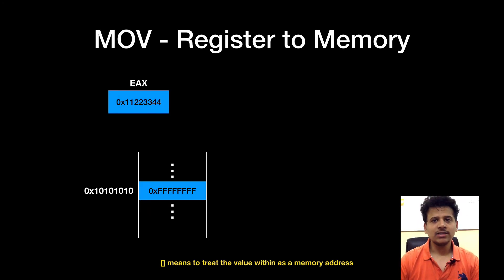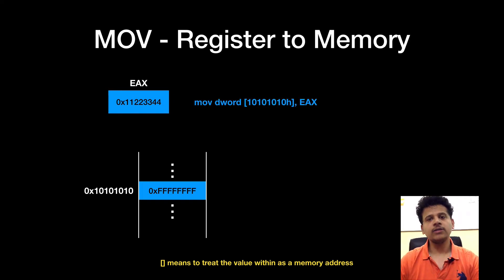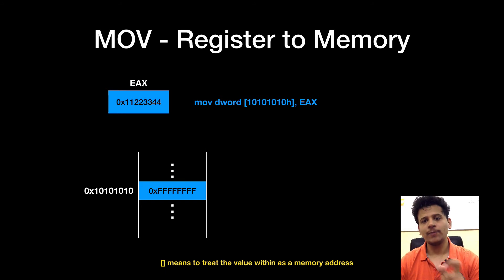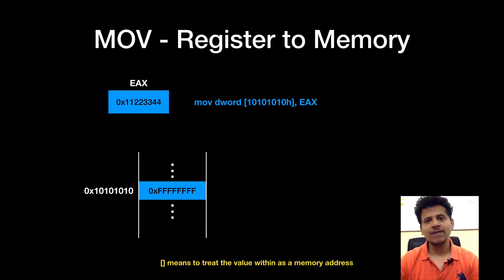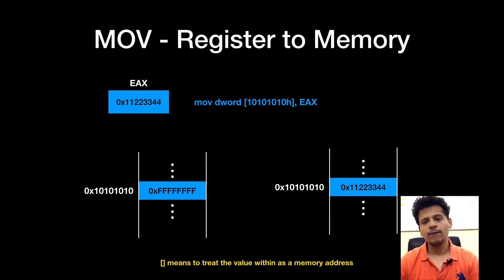Now we will see MOV register to memory. In this case, the value of EAX is 11223344 and the value at memory location 10101010 is 8F. After the execution of the instruction, the value from EAX will be copied to memory location 10101010. We will allocate a double word in memory to copy the value from EAX. Remember: when there is a square bracket, it means to treat the value within as a memory address. After the execution, the value of EAX — 11223344 — will be copied to memory location 10101010.